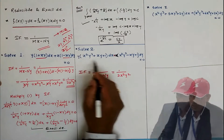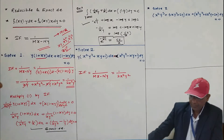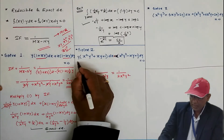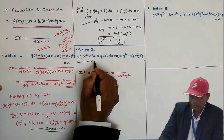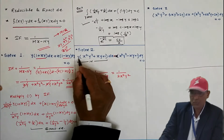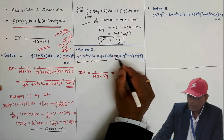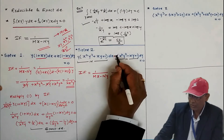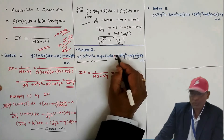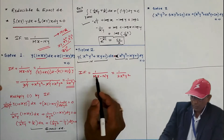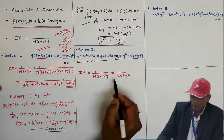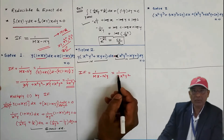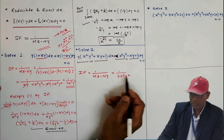Now the second problem. This is the differential equation given. Identify capital M (including y outside the bracket) and capital N (including x outside the bracket). Put the values of m and n into the formula mx − ny and simplify. The integrating factor will be 1/(2x²y²), which I am writing directly.